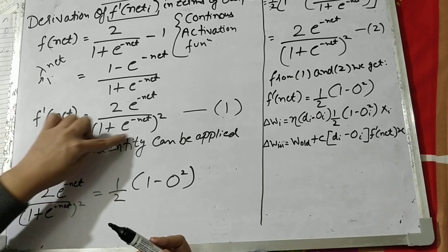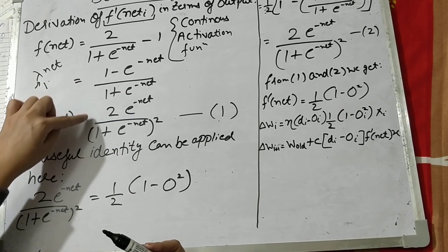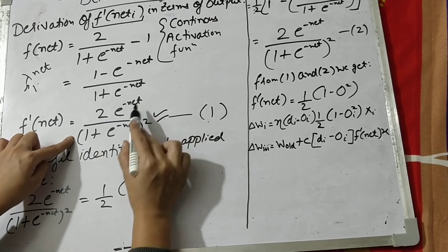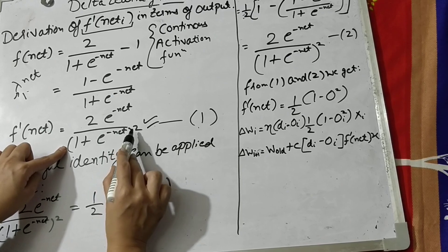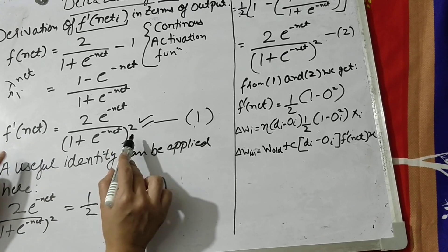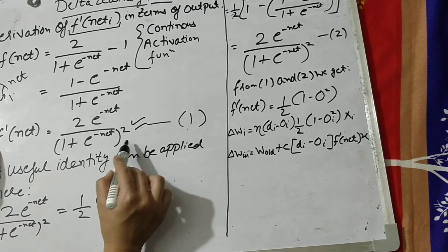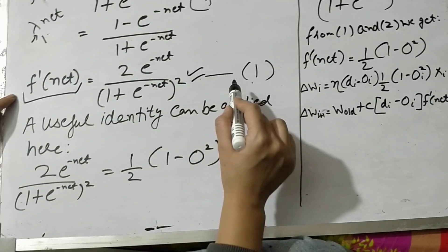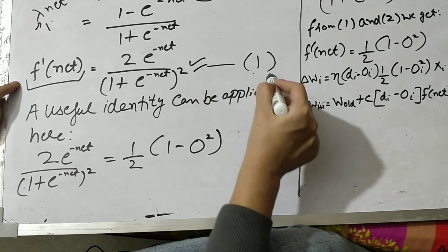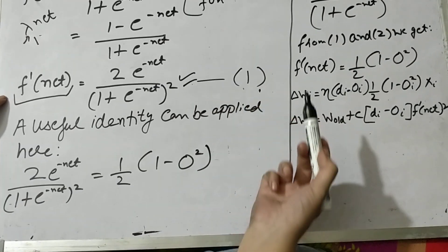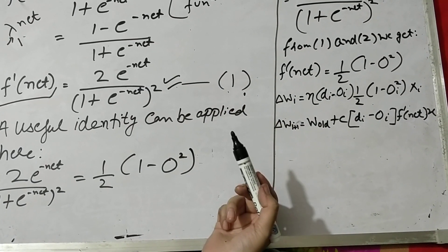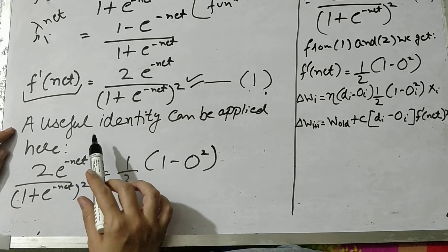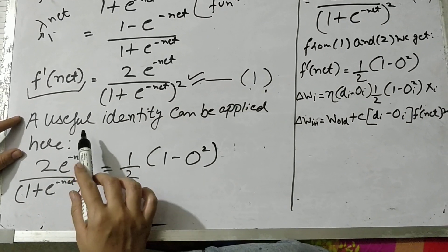Now taking the further derivative of this series, we get the output: 2 times e raised to the power minus net, divided by (1 plus e raised to the power minus net) whole squared. This is what we have evaluated here. We label this as equation number 1 — you can label it as equation a, b, or any label you prefer.